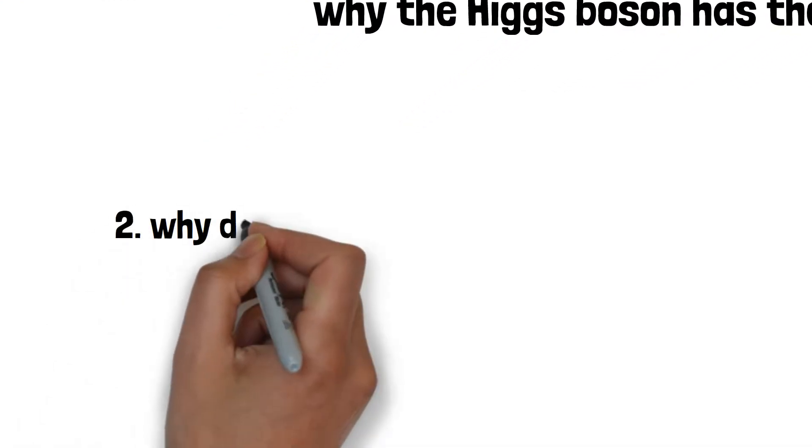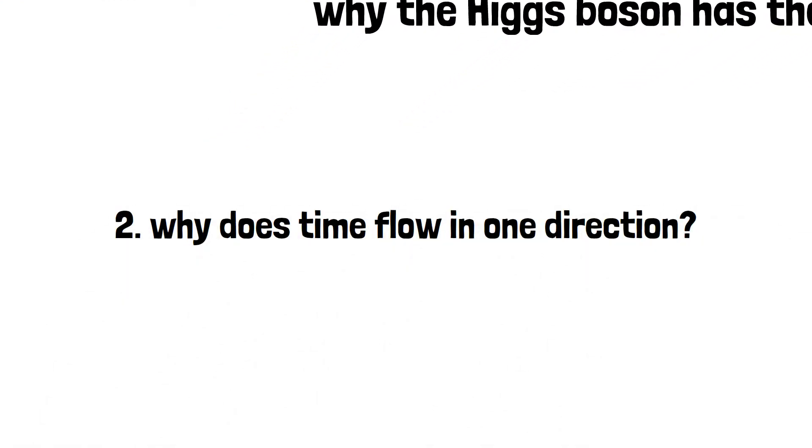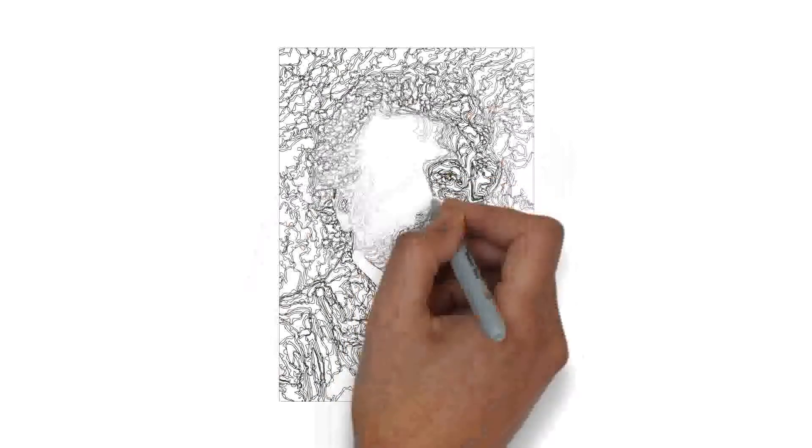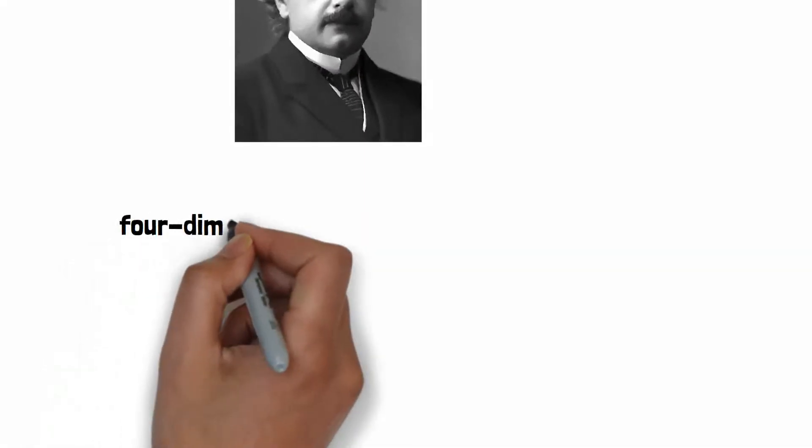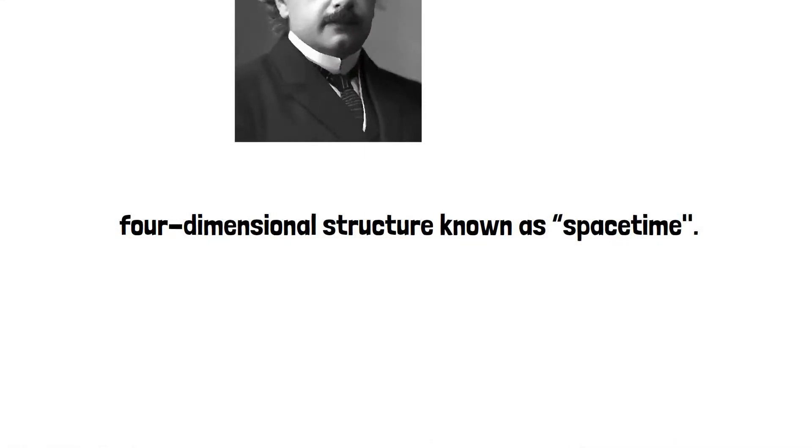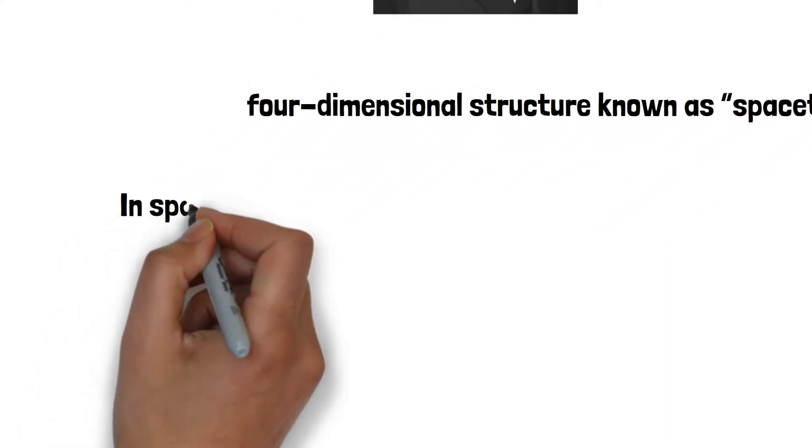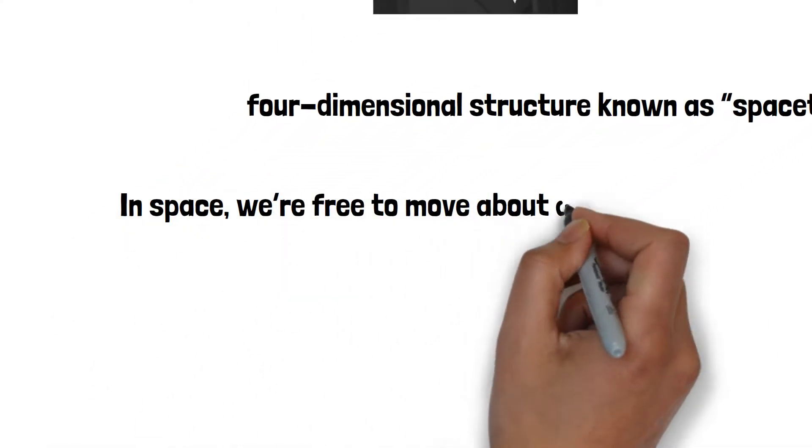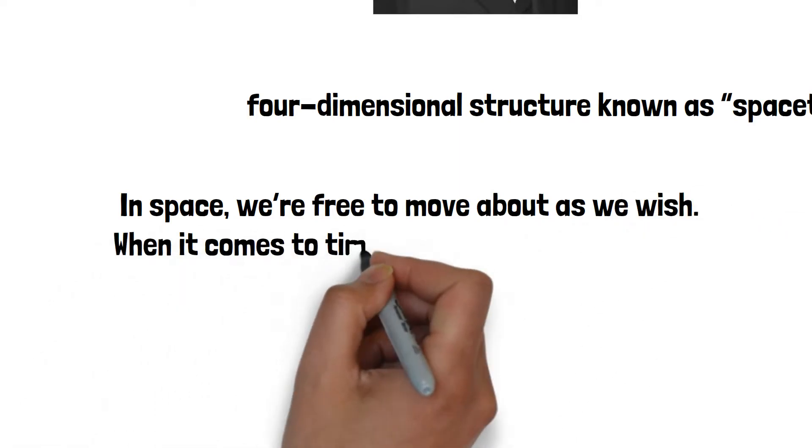Number 2 is why does time flow in one direction? Since Einstein, physicists have thought of space and time as forming a four-dimensional structure known as space-time. But space differs from time in some very fundamental ways. In space, we're free to move about as we wish. When it comes to time, we're stuck.